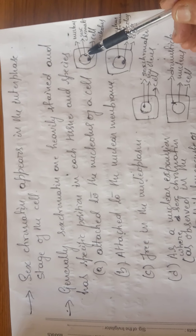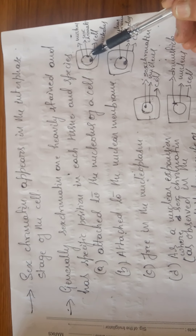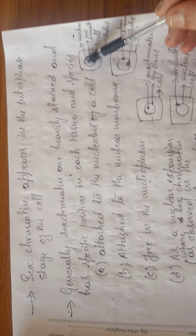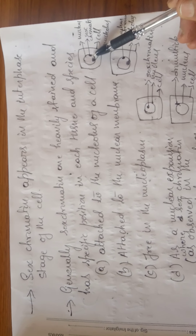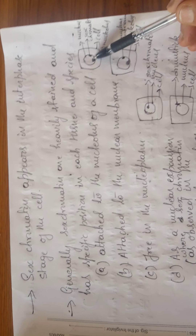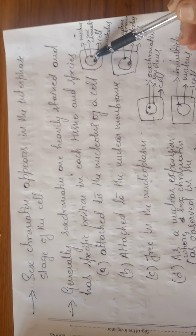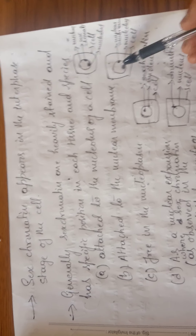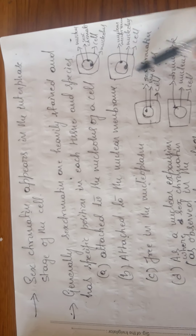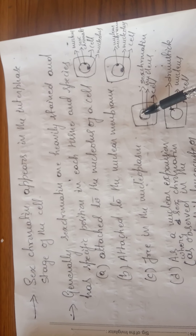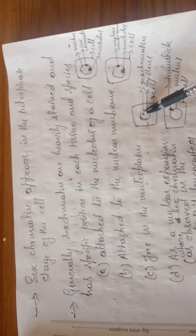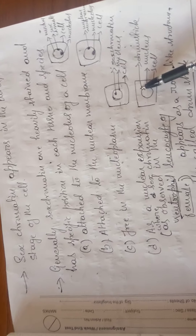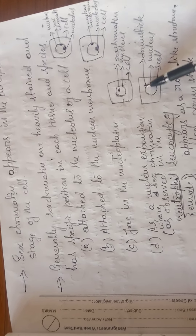Sometimes sex chromatin may be attached near the nucleolus of the cell. If you assume this is a cell with a nucleus and a nucleolus, the sex chromatin may be very closely attached to the nucleolus. It might also be attached to the nuclear membrane, or it may be free in the nucleoplasm — seen somewhere freely within the nucleoplasm. Sometimes it may also appear in the form of a rod-like structure attached to the nuclear membrane.